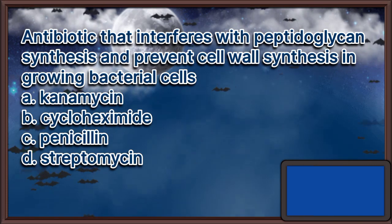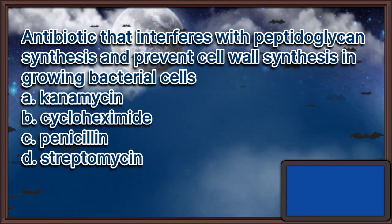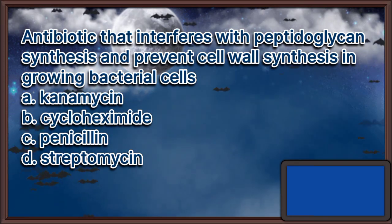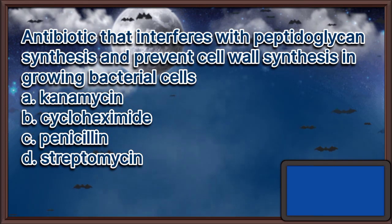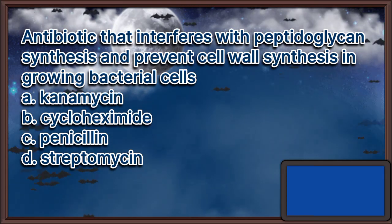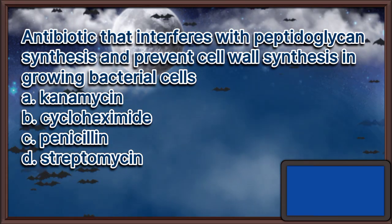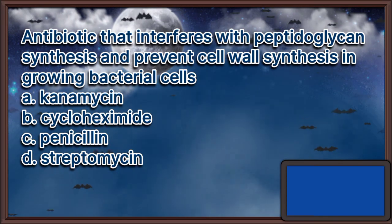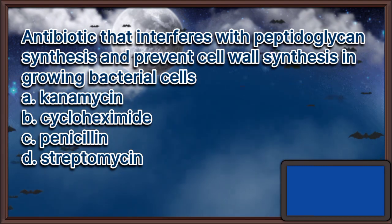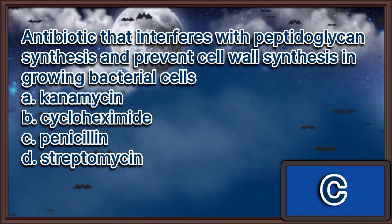Antibiotic that interferes with peptidoglycan synthesis and prevents cell wall synthesis in growing bacterial cells. A. Kanamycin. B. Cycloheximide. C. Penicillin. D. Streptomycin. The answer is letter C.